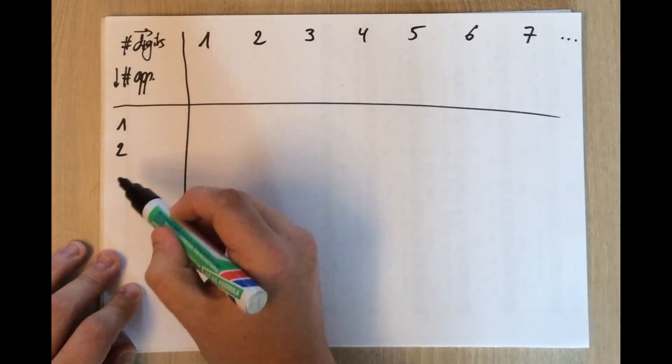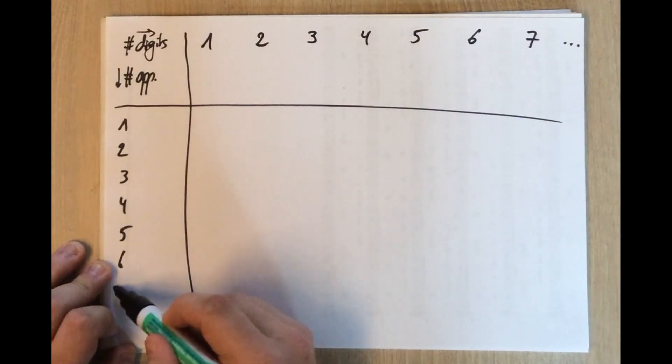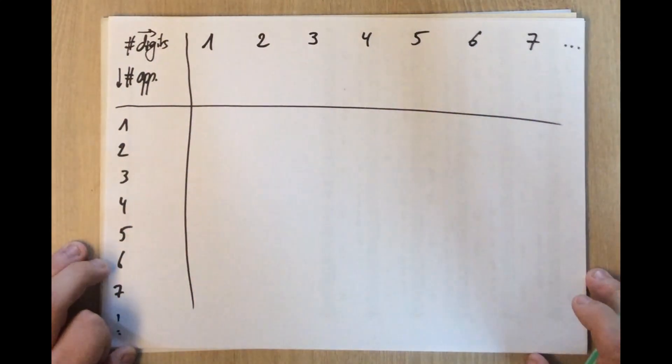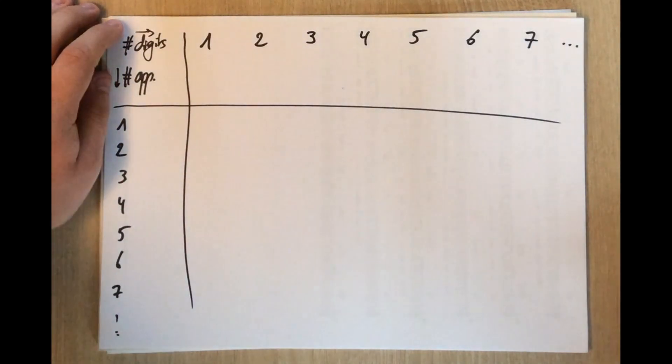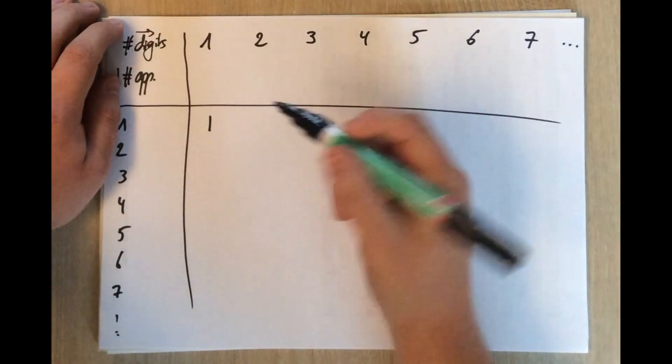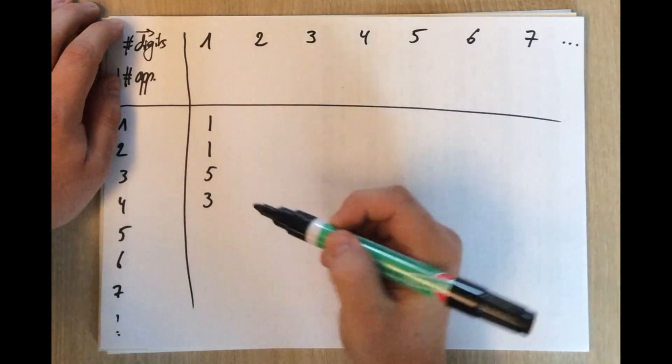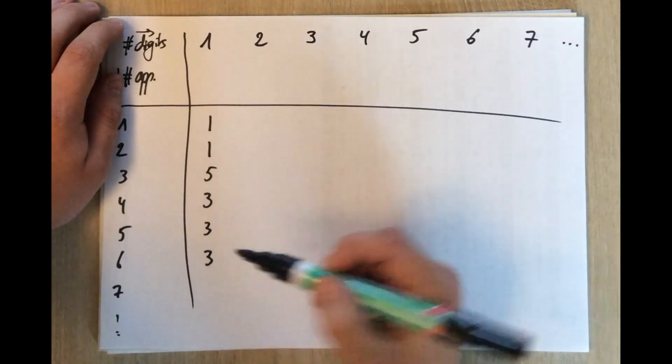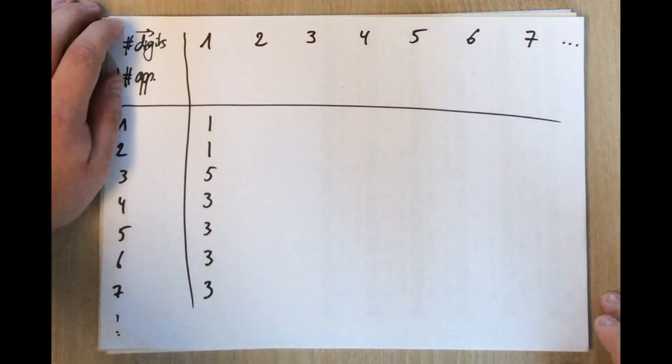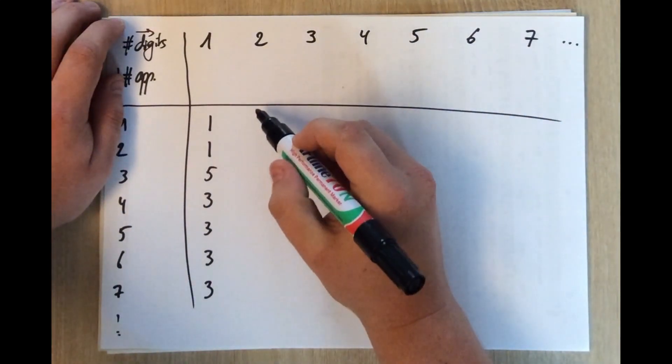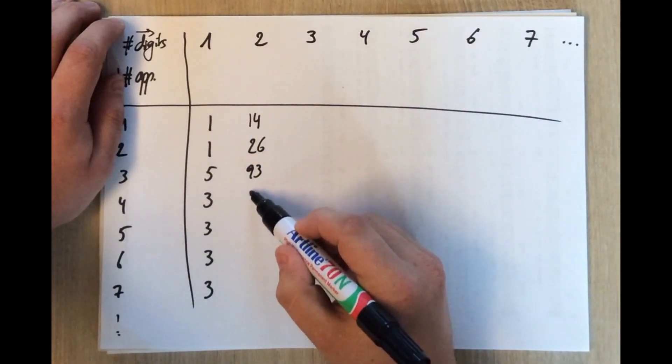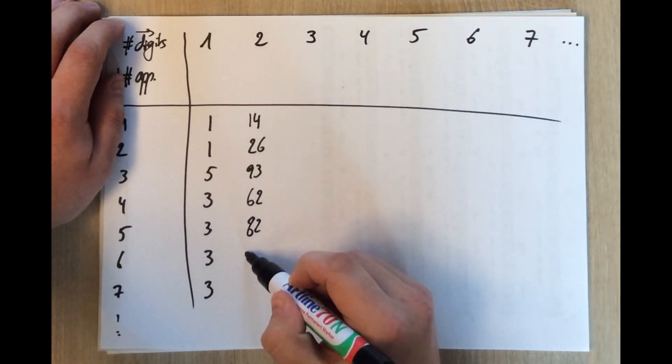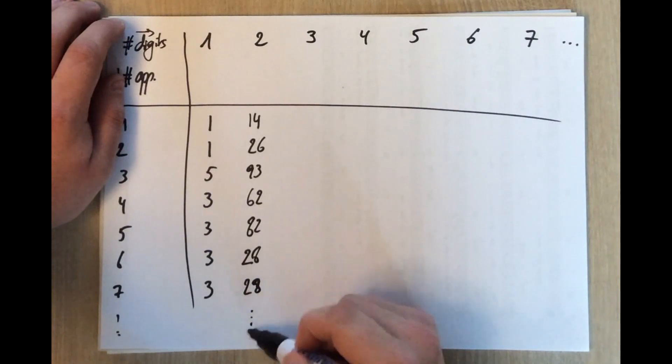And the number of appearances: once, twice, three times, four times, five times, six times, seven times, and so on. If you make this table, of course, I did not look for them by hand. I wrote a little computer program for this. If we fill in this table, it turns out to be this. We already found these numbers. It appears that three is also the first to appear five times, six times, and seven times. Then it changes to nine for a certain amount of time. The two-digit numbers are 14, 26, 93. We already discovered. Then 62, 82, 28, 28, and so on.